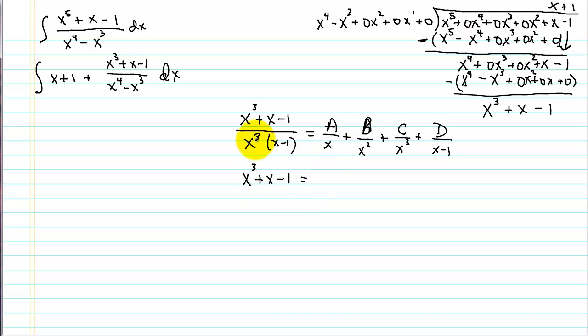And we're going to multiply through by our denominator to get rid of all of our fractions. So here I'm canceling out one of the x's. So I've got x squared times x minus one. Here I'm canceling out two of the x's. Here I'm canceling out all three of the x's. And on this one I'm canceling out the x minus one. Didn't really need the parentheses there.